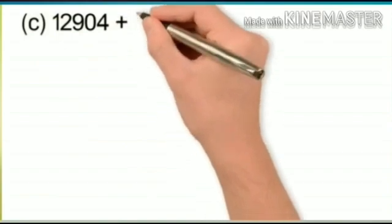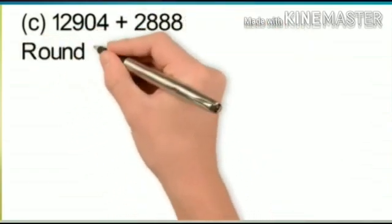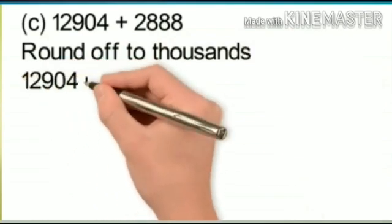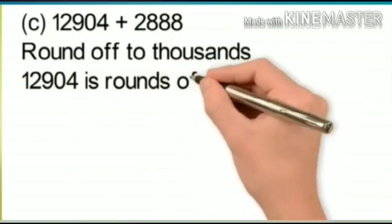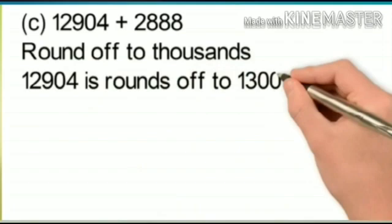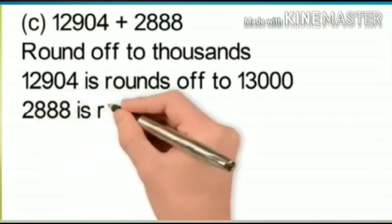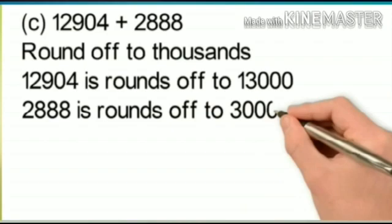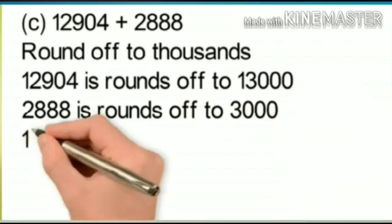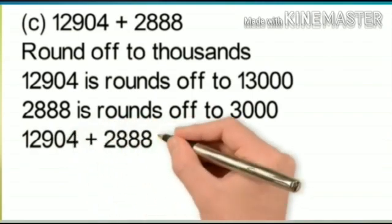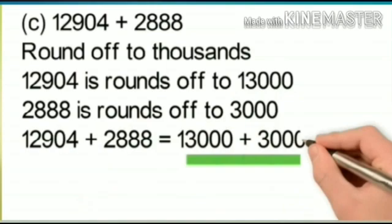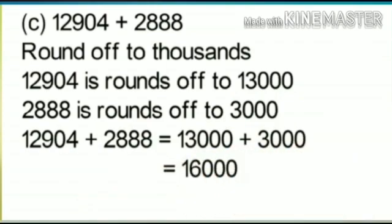For 12904 + 2888, rounded off to thousands: 12904 lies in between 12000 and 13000, and is closer to 13000, so it rounds off to 13000. 2888 lies in between 2000 and 3000, and is closer to 3000, so it rounds off to 3000. Therefore, 12904 + 2888 ≈ 13000 + 3000 = 16000.